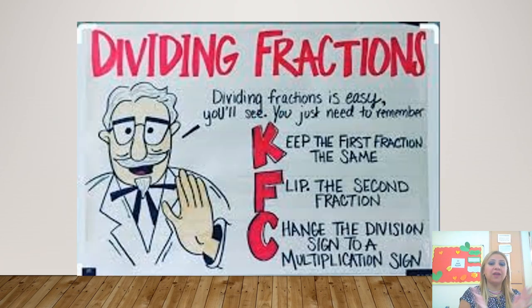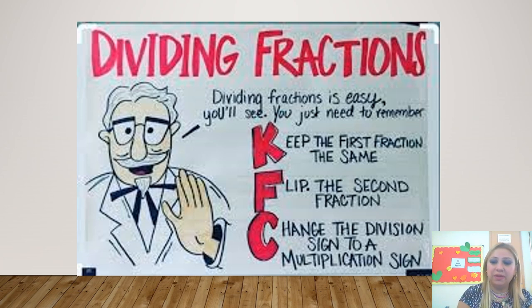So dividing fractions is very easy. Just remember K, F, C. We all love KFC. K is for keeping the first fraction the same. F is for flipping the second fraction. And C is for changing division sign to multiplication sign. And that's all.